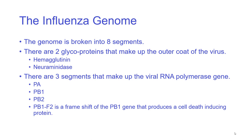There are three segments that make up the viral polymerase gene. This is really important to the virus because otherwise it cannot replicate within cells — it needs to provide an RNA polymerase to hijack cells into creating new copies of itself. These segments are PA (polymerase A), PB1, and PB2. There's also a frameshift variant of the PB1 gene, which produces a cell-death-inducing protein.